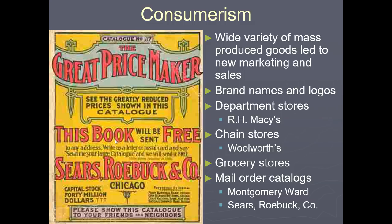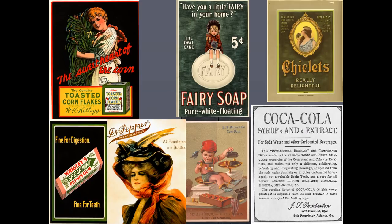During this time, consumerism became popular — people were buying not just for what they needed but for what they wanted. Department stores like Macy's were founded during the Gilded Age, along with Woolworth's and mail order catalogs from Sears Roebuck, Montgomery Ward, and JC Penney's. As people moved out West, they ordered supplies from the East — they'd get a catalog, telegraph their order, pay for it, and pick it up at the nearest railroad town. Products like Dr. Pepper, Wrigley's gum, and toasted cornflakes also emerged during this era.